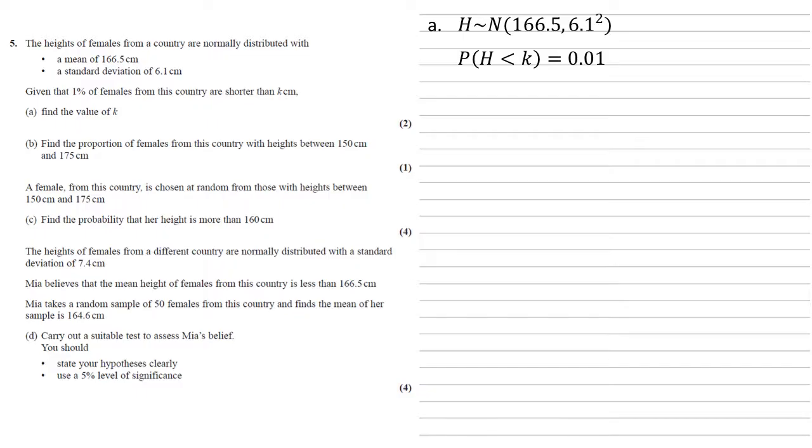If it doesn't, I'm going to have to go from the standard normal distribution. We can put that into the inverse normal with an area of 0.01, a mean of 0 and a standard deviation of 1. Putting that in gives us minus 2.326.